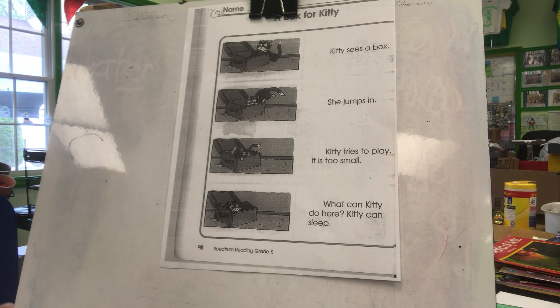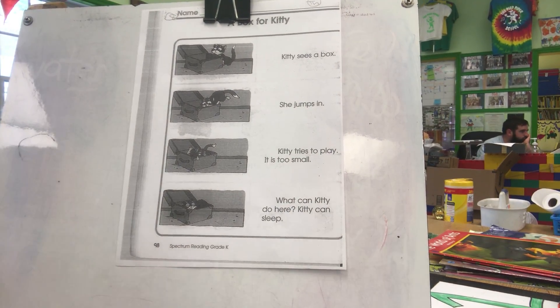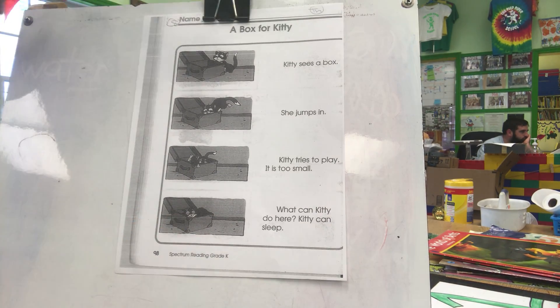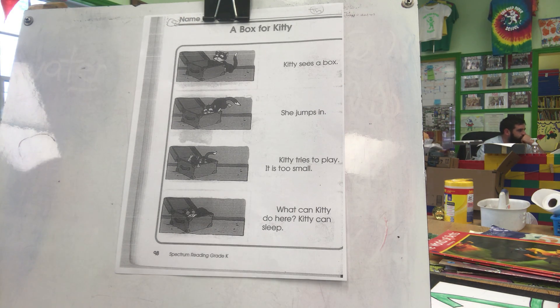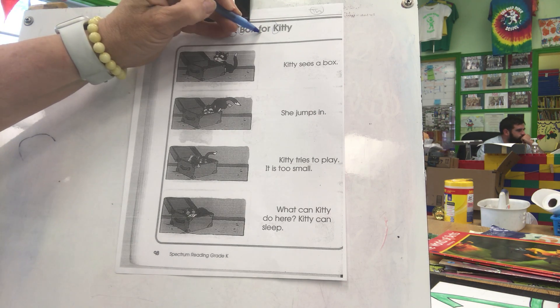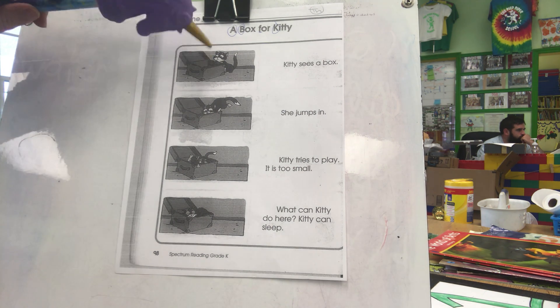What kind of story are we reading today? I see our old friend Kitty. There's Kitty ready to get into action. I've got my pointer, and let's rock and read. The title says, A Box for Kitty.